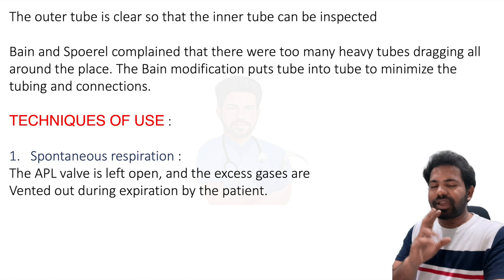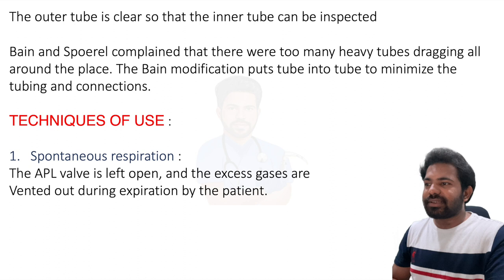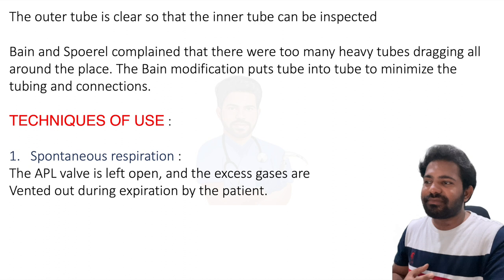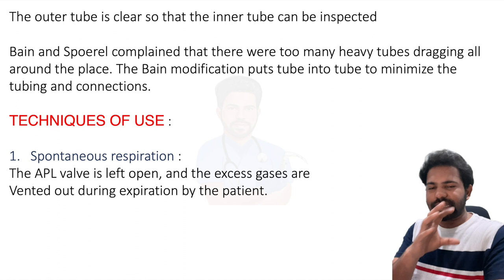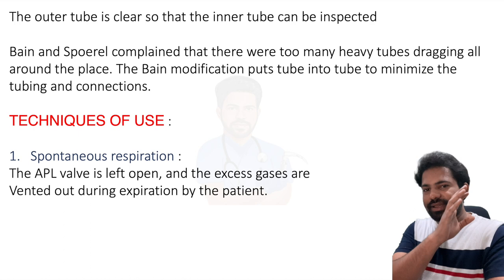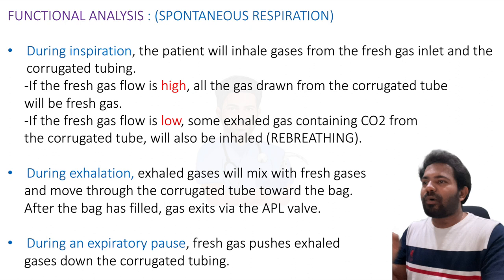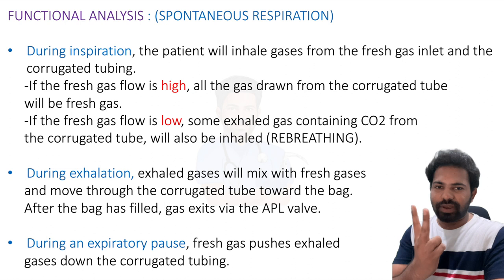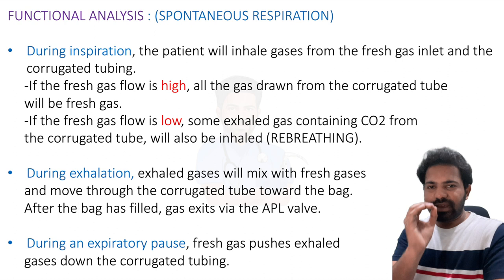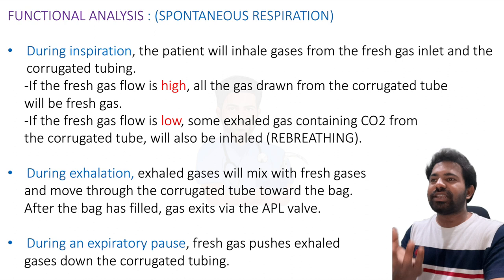The Bain circuit can be used for spontaneous respiration as well as controlled ventilation. During spontaneous ventilation, when the patient breathes by himself, the APL valve is left open and excess gases are vented out during expiration. You are not squeezing the bag; the expired gases exit through the APL valve outlet. The functional analysis covers three phases: inspiration, expiration, and expiratory pause. During inspiration, the patient inhales gases from the fresh gas inlet and the corrugated tubing.